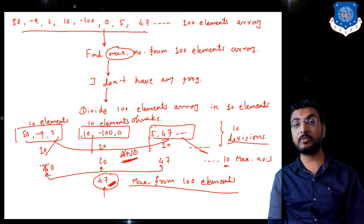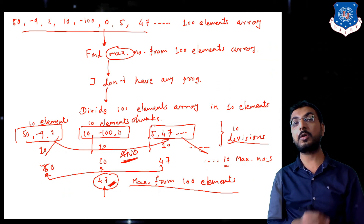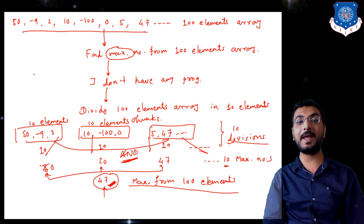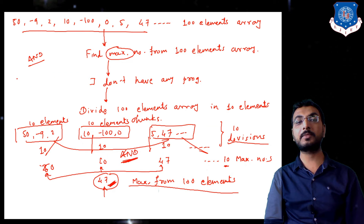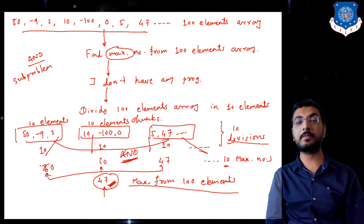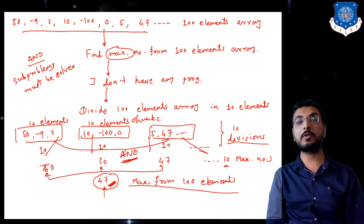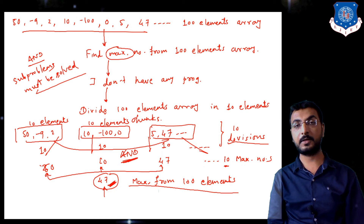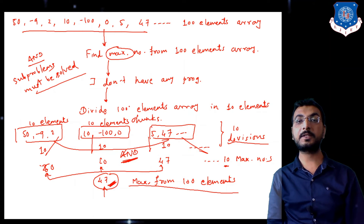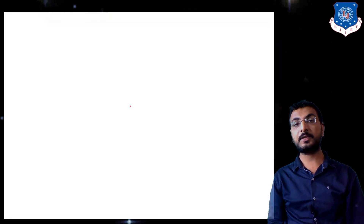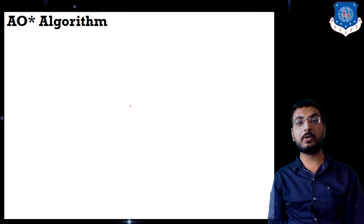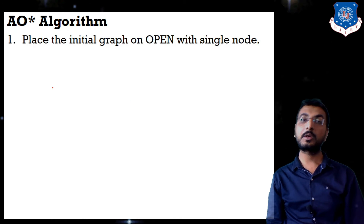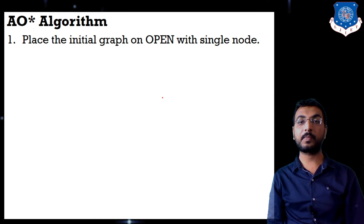This is the scenario of problem reduction: once we decompose the problem, all sub-problems are connected by AND edges and all must be solved. This is the complete scenario of the AND-OR graph.